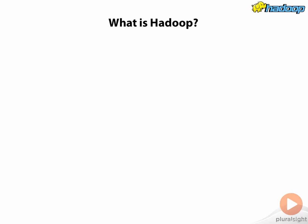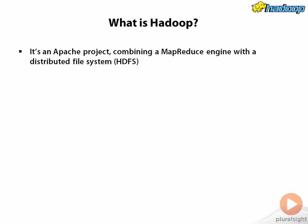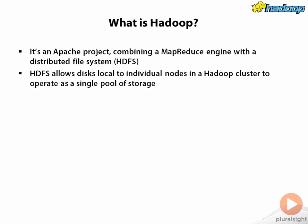What is Hadoop? We've already talked about what MapReduce is. Hadoop is an Apache project that combines a MapReduce engine with a distributed file system called HDFS, the Hadoop Distributed File System. These are open source implementations of Google's MapReduce and Google's file system, GFS. So that's really what Hadoop is about.